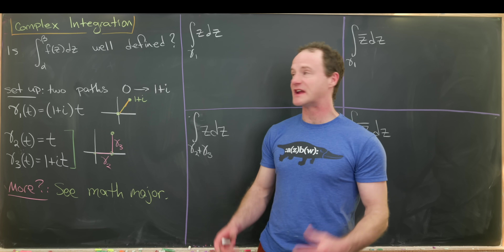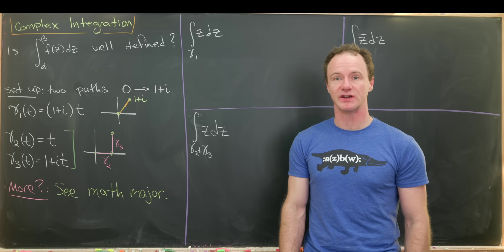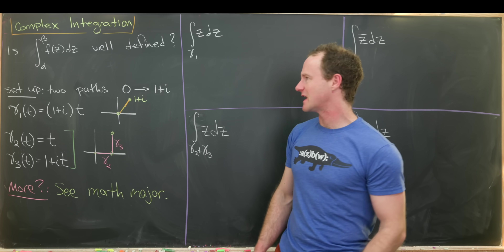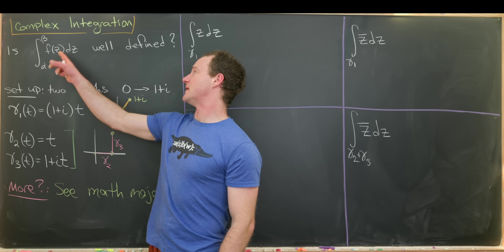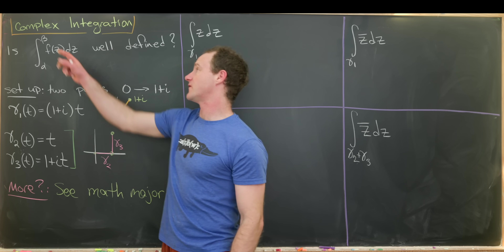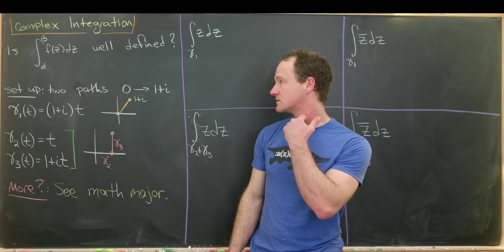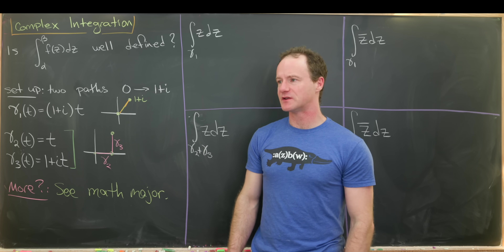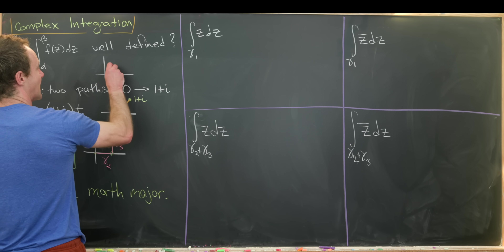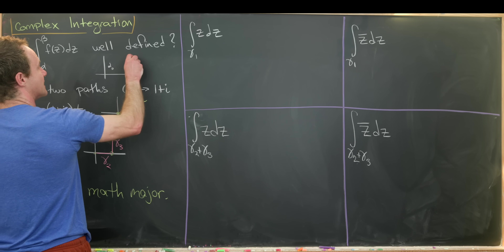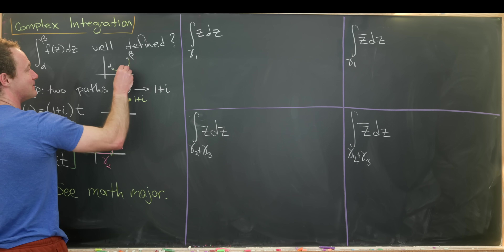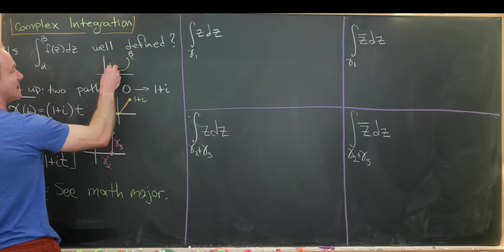Here we're going to explore some of the strangeness that is complex integration. What do we even mean by a complex integral? Is the integral from alpha to beta of f(z) dz well defined, where alpha and beta are complex numbers? I really ask if it's well defined because if you're thinking about the complex plane, there are infinitely many paths you can take from alpha to beta.